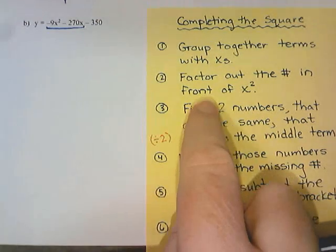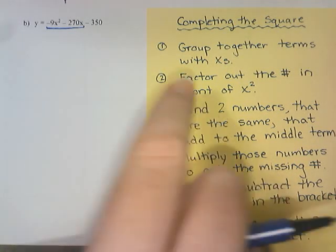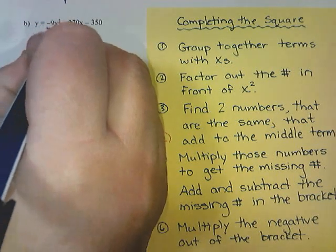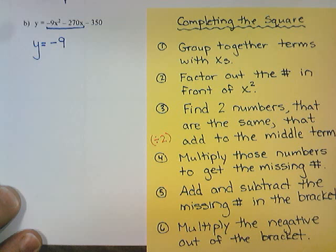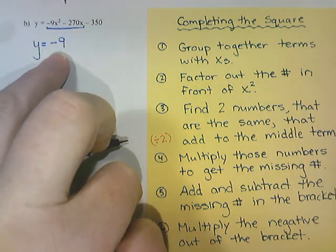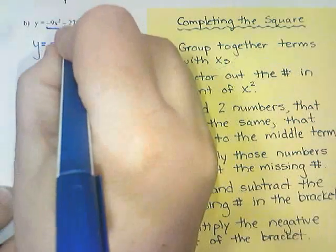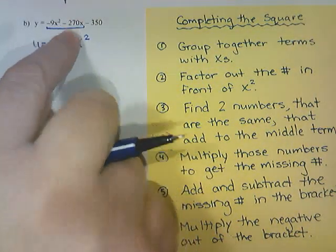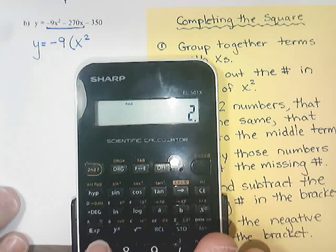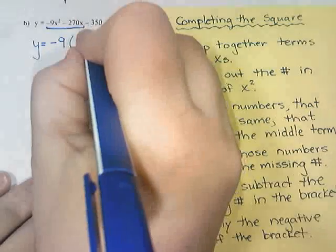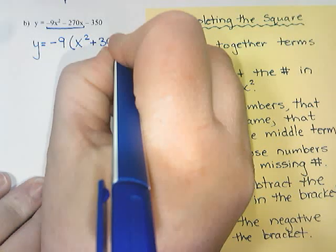Then we're going to factor out the number in front of x squared. In front of x squared there's a negative 9, so we're going to factor out negative 9, not negative 9x, just negative 9. Negative 9x squared divided by negative 9 gives me x squared. And then negative 270 divided by negative 9 is 30, so that's plus 30x.